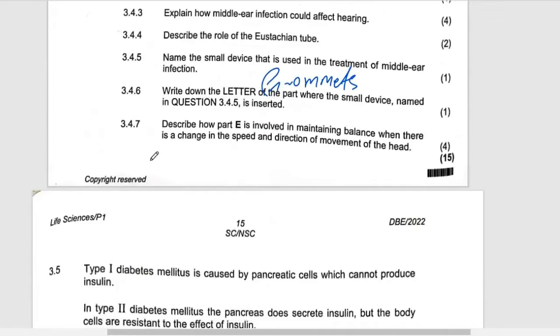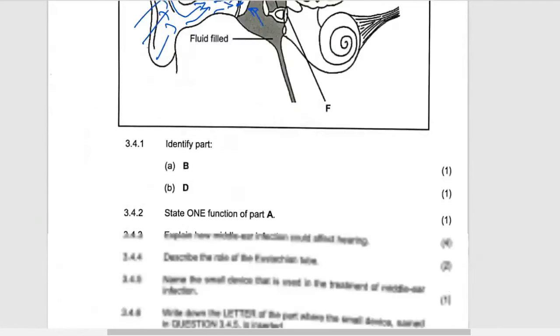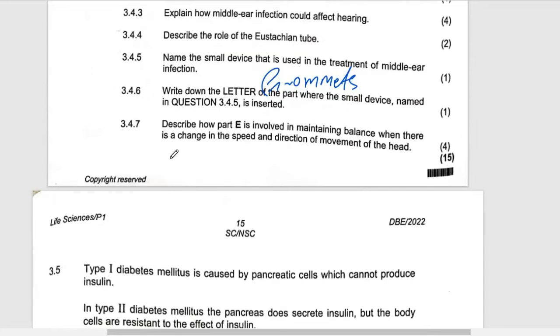And then lastly, describe how part E. What is part E? The semicircular canals. Whenever you talk about the semicircular canal, we are talking about balancing. So this is how part E is involved in maintaining balance when there is a change in the speed and direction. Whenever you talk about the direction, now you are talking about the cristae.